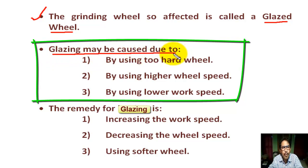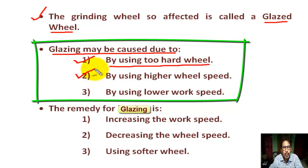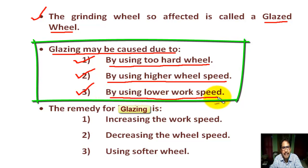Glazing may be caused due to: number one, by using too hard a wheel; number two, by using a higher cutting speed; number three, by using a lower work speed.